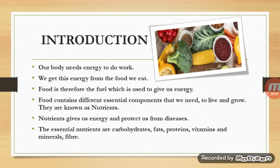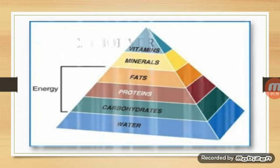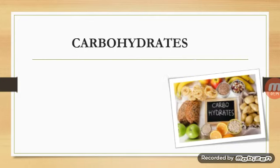The essential nutrients are carbohydrates, fats, proteins, vitamins, minerals, and fiber. You need to remember these are the parts of food: carbohydrates, proteins, fats, minerals, vitamins, and water. You need to remember this pyramid — these are the main components of our food that we eat.